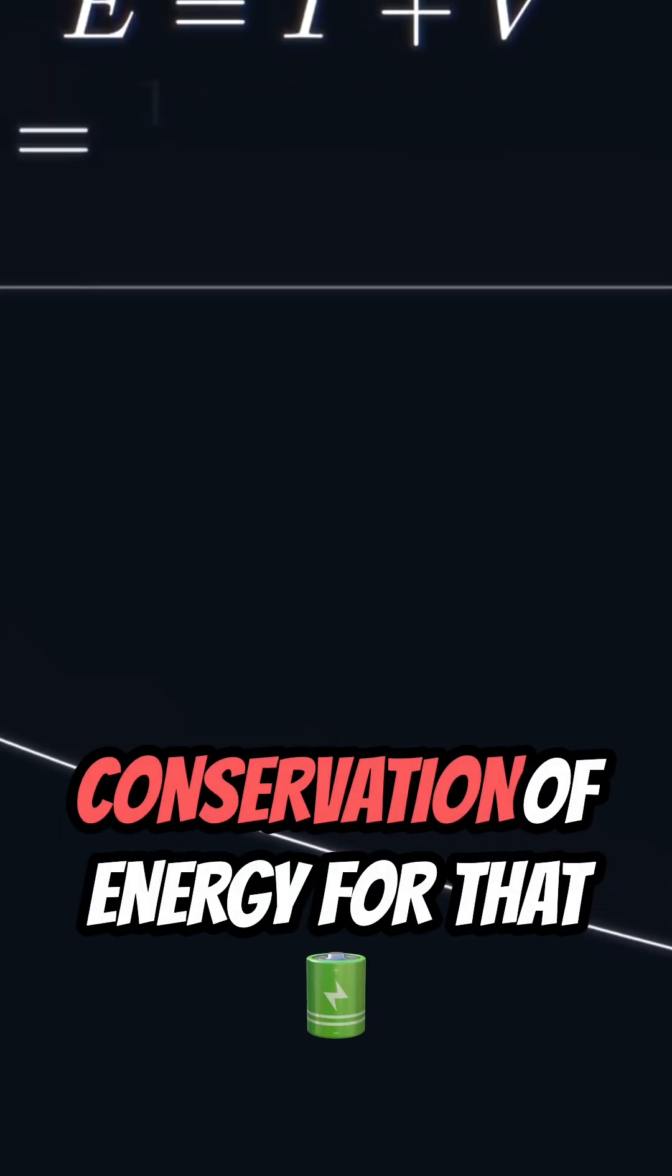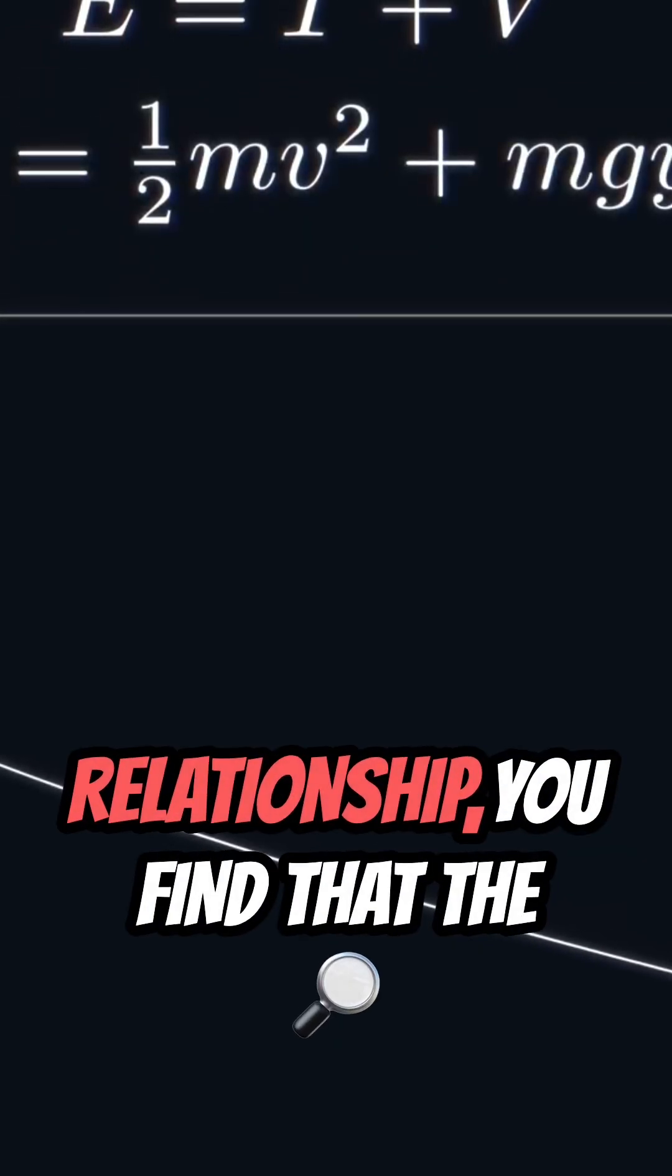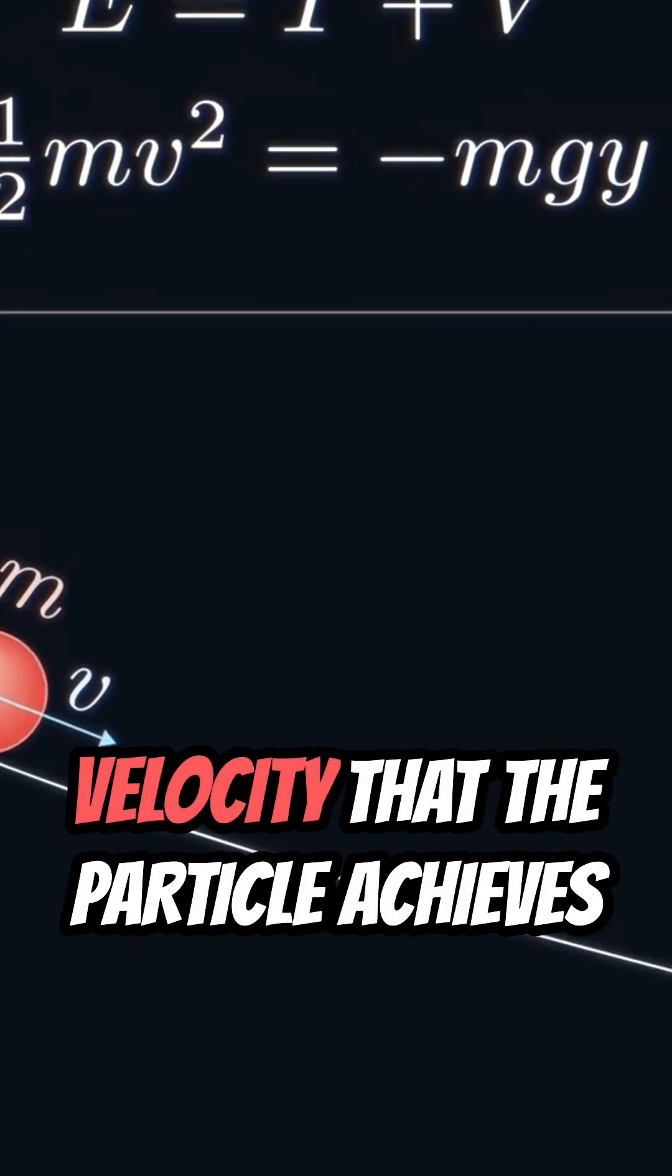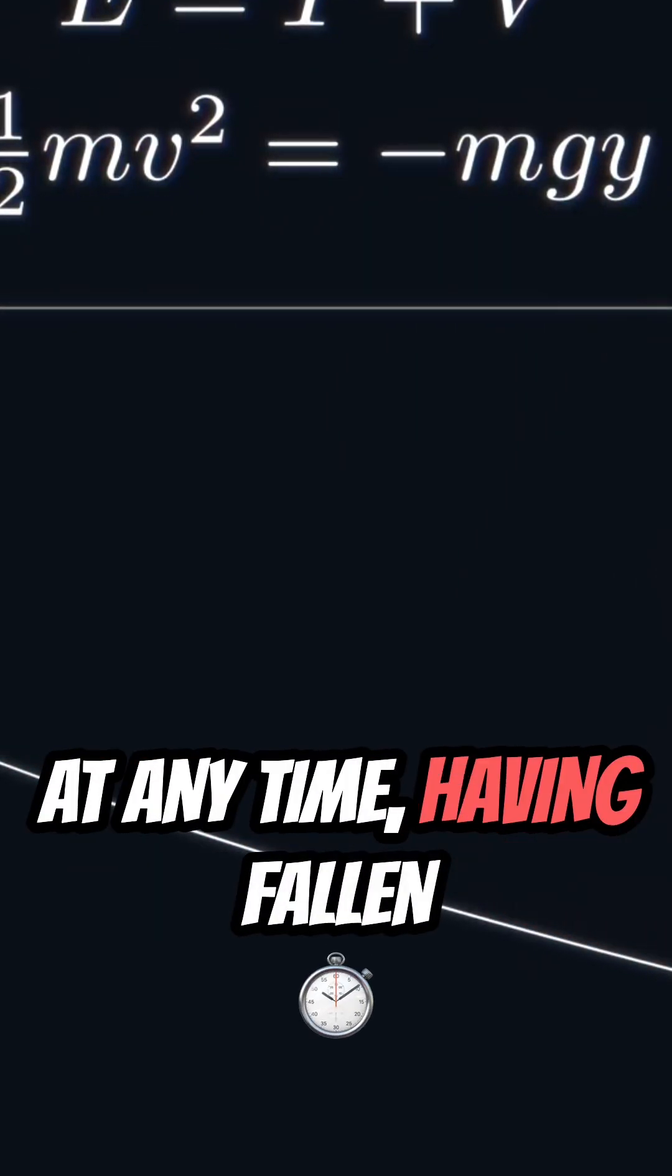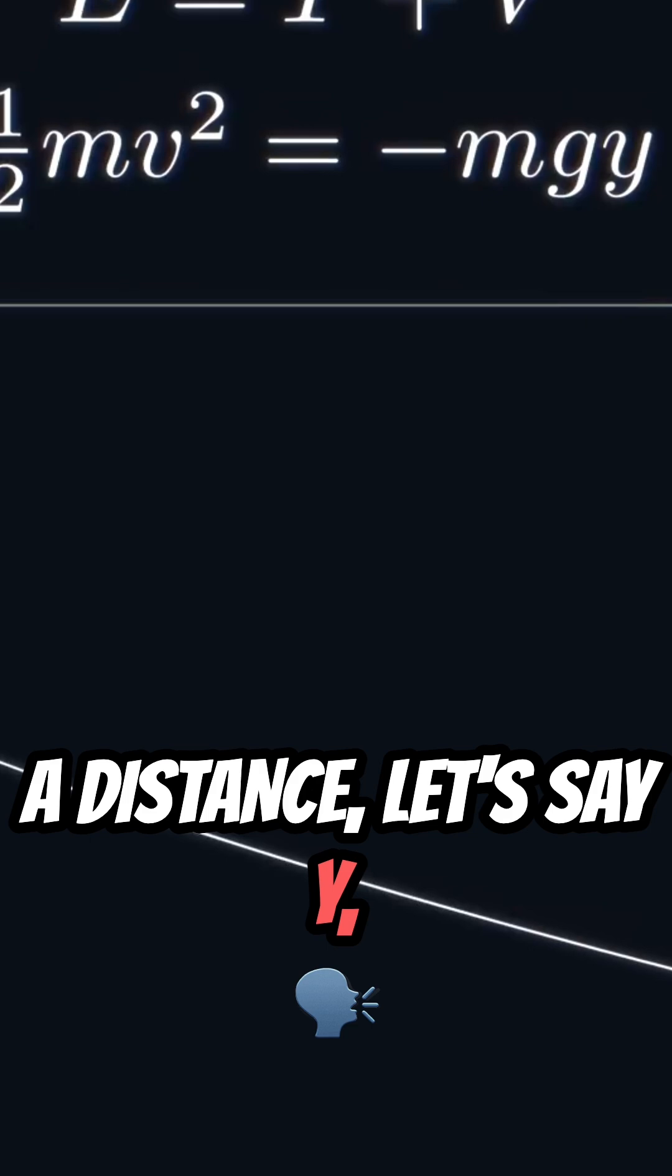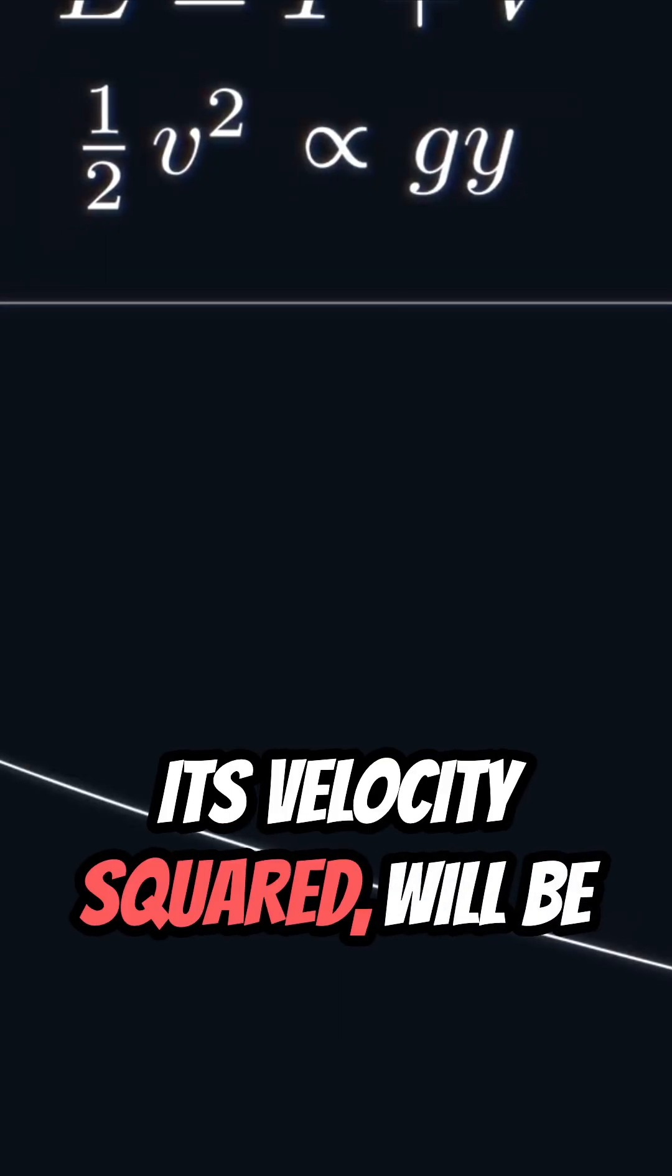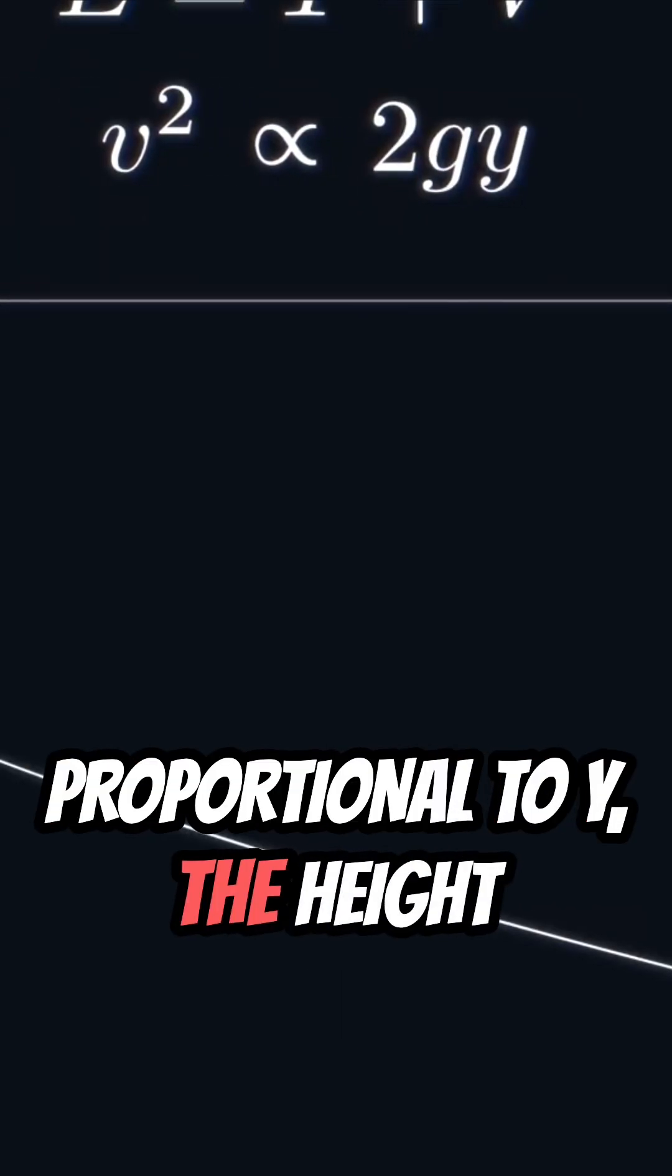If you write down the conservation of energy for that relationship, you find that the velocity that the particle achieves at any time, having fallen a distance y, its velocity squared will be proportional to y, the height from the top.